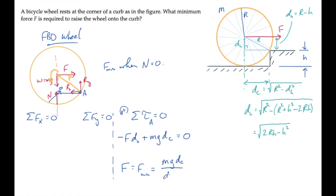When you substitute the expressions we have from before for those two distances, you finally find this expression. This minimum force gets smaller as the wheel gets larger and the minimum force gets larger as the curb's height H increases.